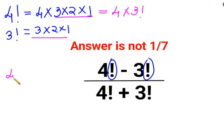So let's do this. We will write it as 4 multiplied by 3 factorial minus 3 factorial upon 4 multiplied by 3 factorial plus 3 factorial.